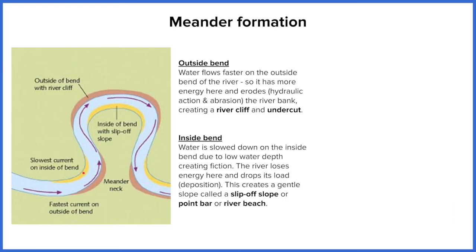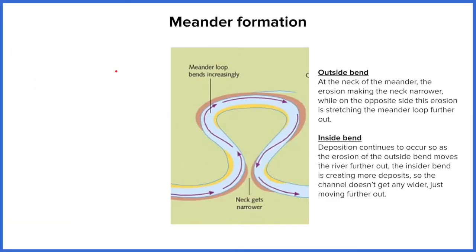On the inside bend new land has been created; on the outside bend land has been lost. So the channel doesn't get wider or narrower — but it does migrate, meaning it moves. Land made here and lost here means the river channel starts moving in that direction. As the meander develops, the neck becomes very narrow with almost no land between the two sides.